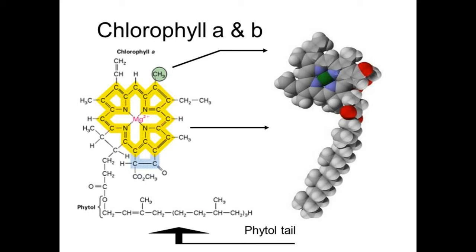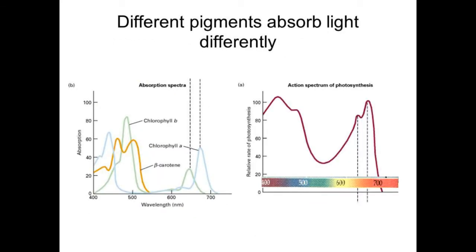Chlorophyll A and B absorb sunlight — not the entire light spectrum but only within the visible light wavelength. There are different peaks that absorb light. Only approximately 3 to 5 percent of the radiation energy is captured and converted into chemical energy.